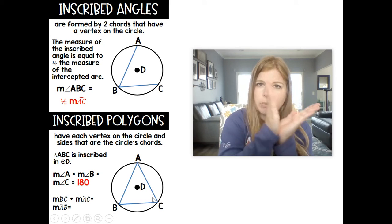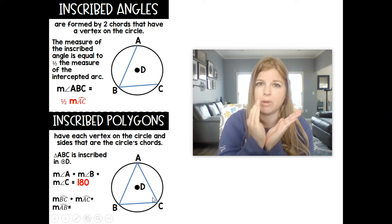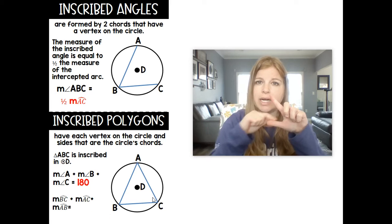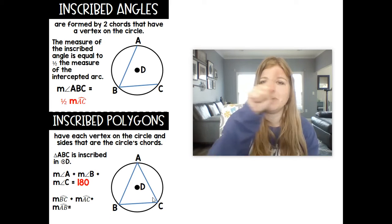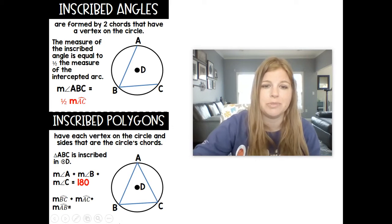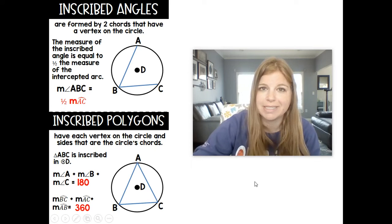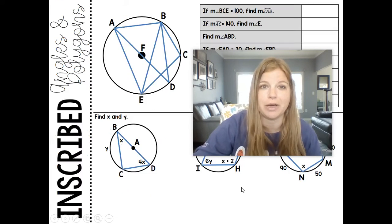If all the angles inside the triangle add up to 180, then all of the arcs' measures add up to 360. So it works out with these ideas that we already know.